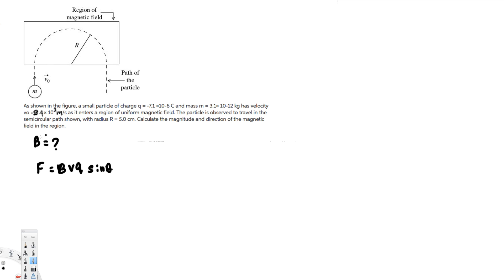Since the particle is perpendicular to the magnetic field, we use sin(90°) = 1, so we can eliminate sinθ. The equation becomes F = BVQ. Now since this is moving in a semicircular path, we have a centripetal force.